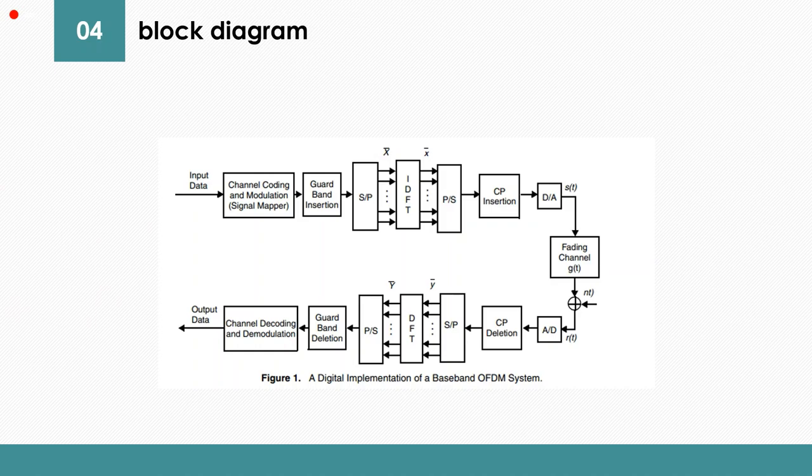The diagram starts with input data, and after that, it goes through the channel coding and modulation. In my project, I'm using QAM, and then insert a guard band. After that, using a serial to parallel operation to get multipath, and make inverse discrete Fourier transform to get time domain, then make parallel to serial, and cyclic prefix insertion.